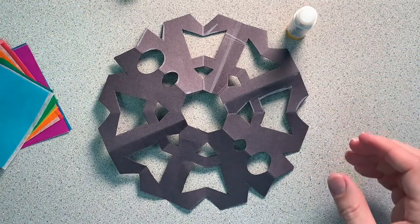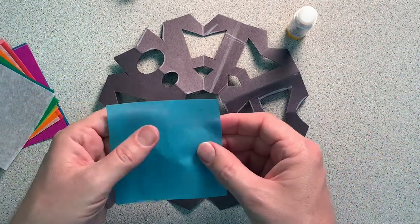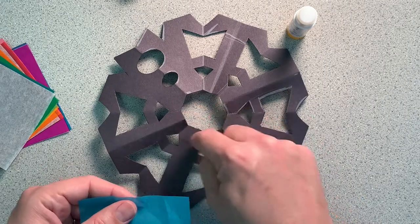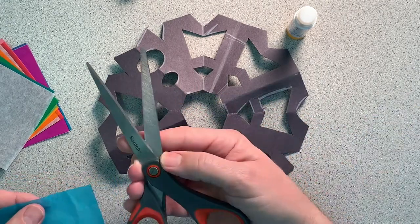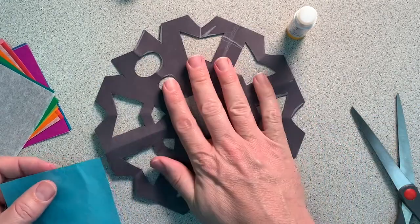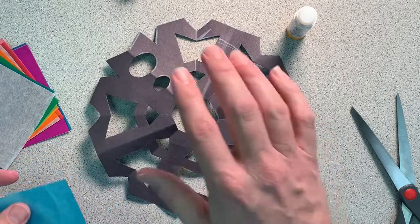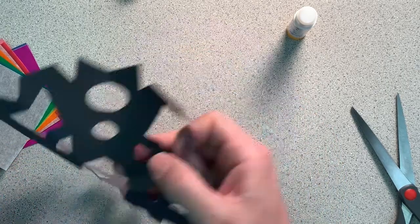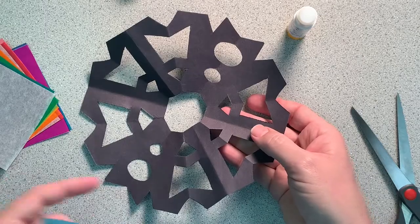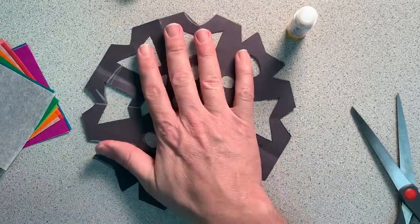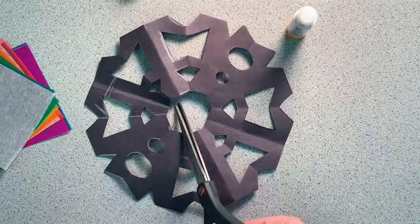So you pick a color and you can either tear it to fit the shape or use your scissors and cut it so it fits the opening. But only glue on the back. Don't flip it over as you're working because you'll end up gluing on the wrong side. Only glue on the back.